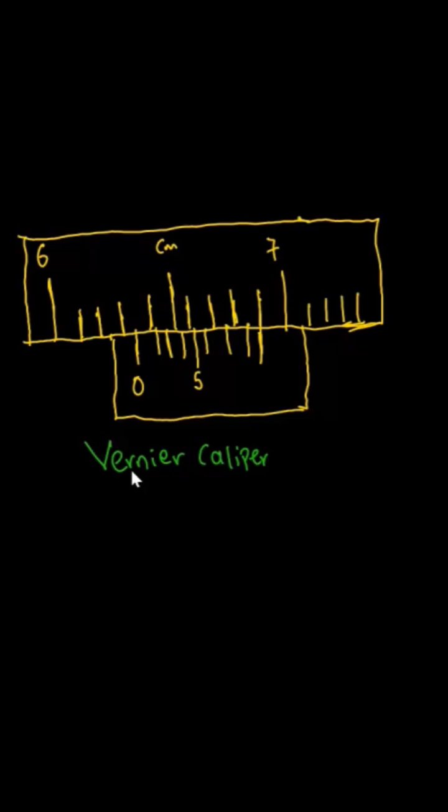It also measures thickness of plates or the thickness of metal. A vernier caliper, as shown on your screen, consists of two scales. The one above is called the main scale, and the one beneath is called the vernier scale.